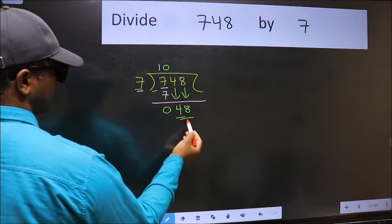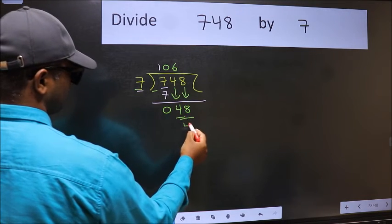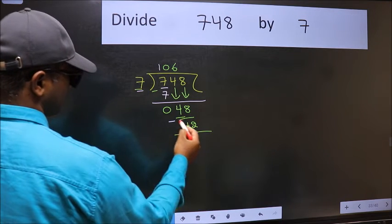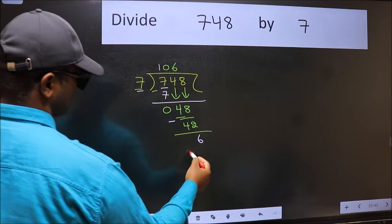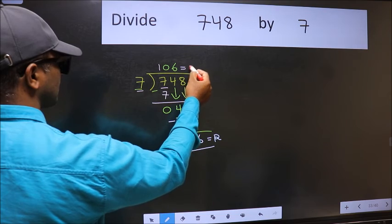Now 48. A number close to 48 in 7 table is 7 6 42. Now we should subtract. We get 6. No more numbers to bring it down. So we stop here. This is our remainder and this is our quotient.